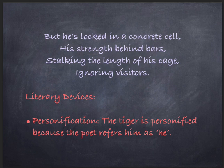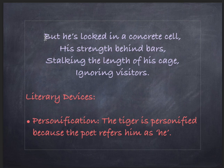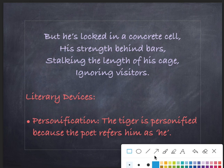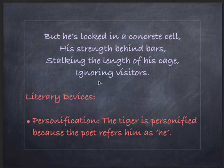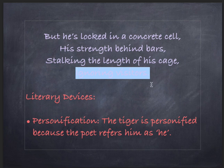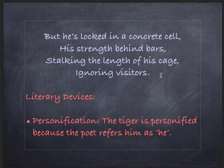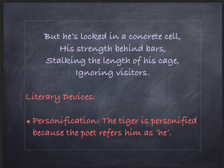Then we move to the next stanza: 'But he is locked in a concrete cell.' The poet now says the tiger should be out in the jungle terrorizing villagers, but what is actually happening is he is locked in a cell. He is only allowed to move within his cage — stalking the length of it. He ignores visitors; he is tired of watching people come and stare at him. So the tiger starts ignoring any visitor. Again, the literary device here is personification, as the tiger is personified throughout the whole poem.